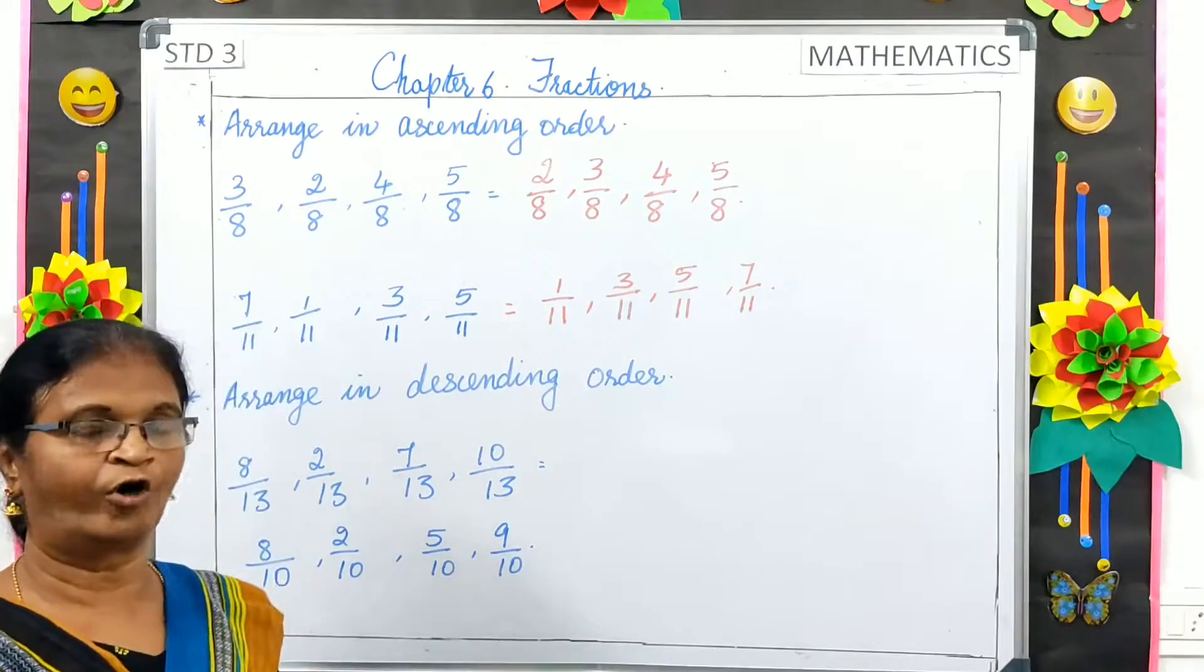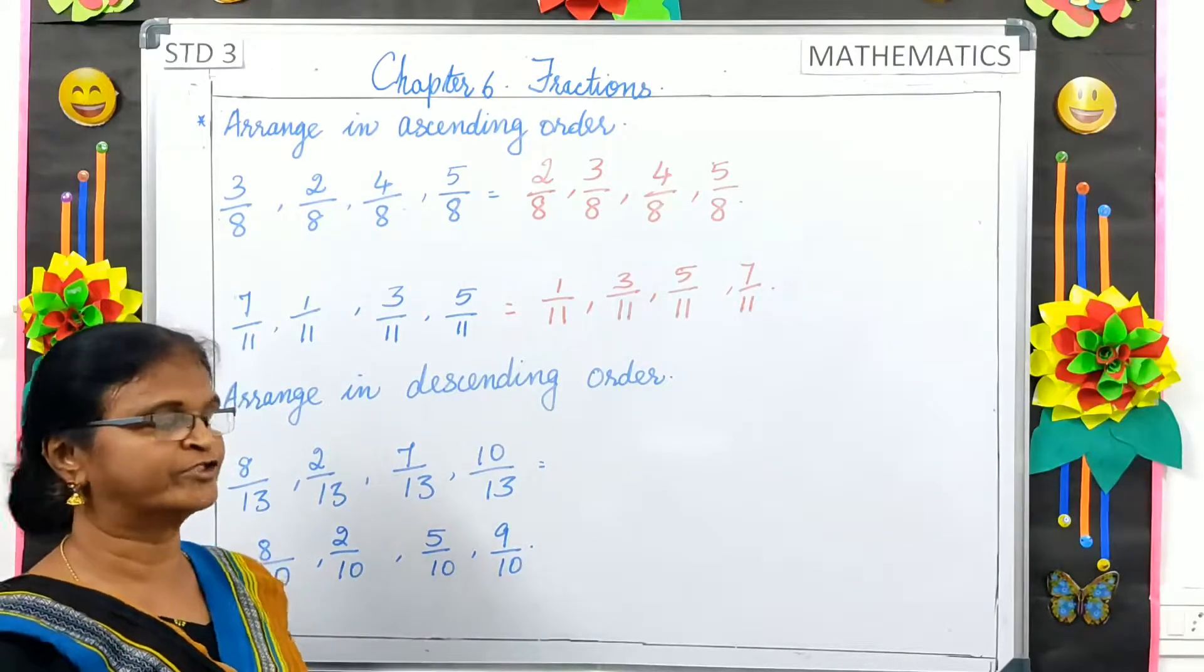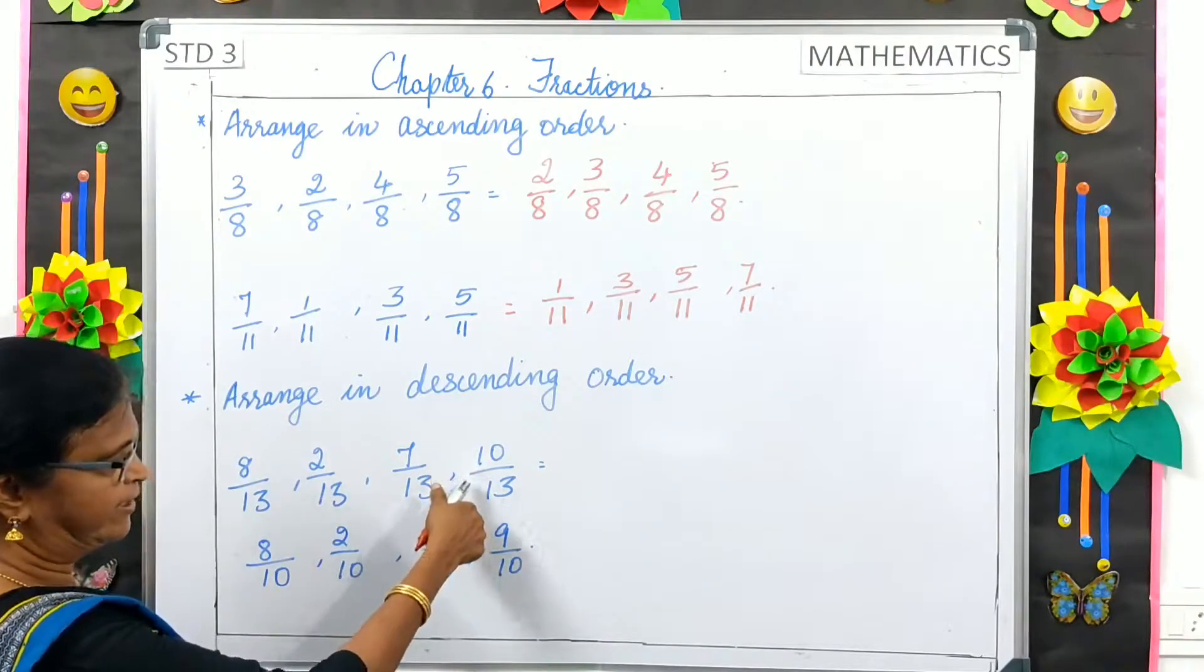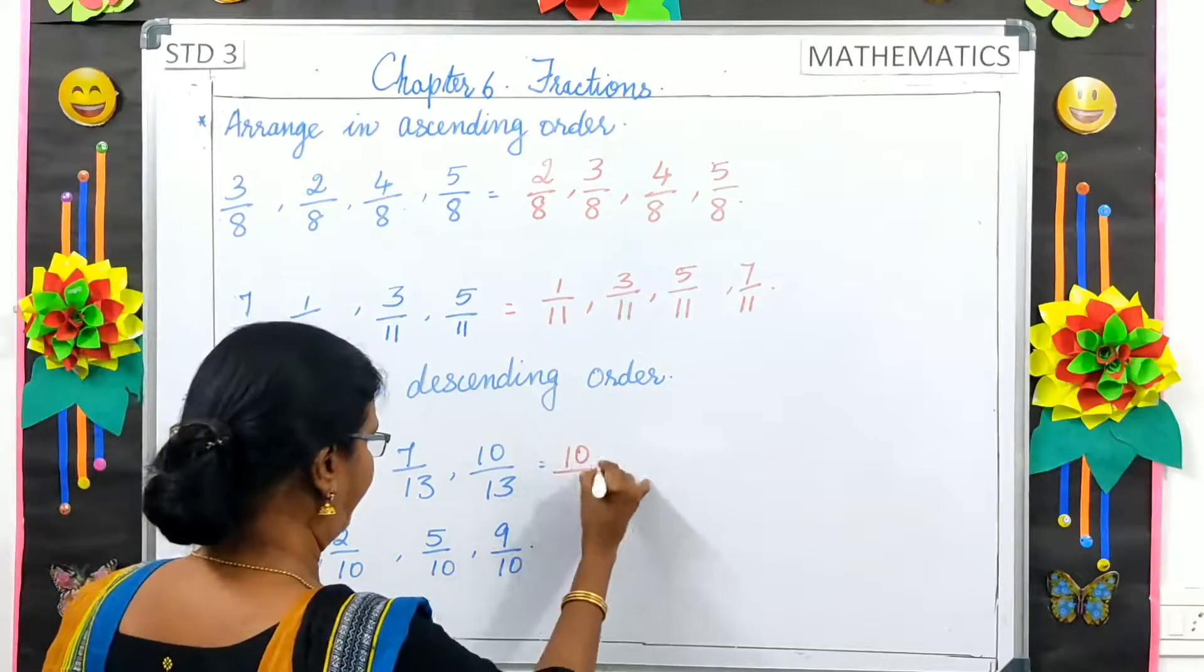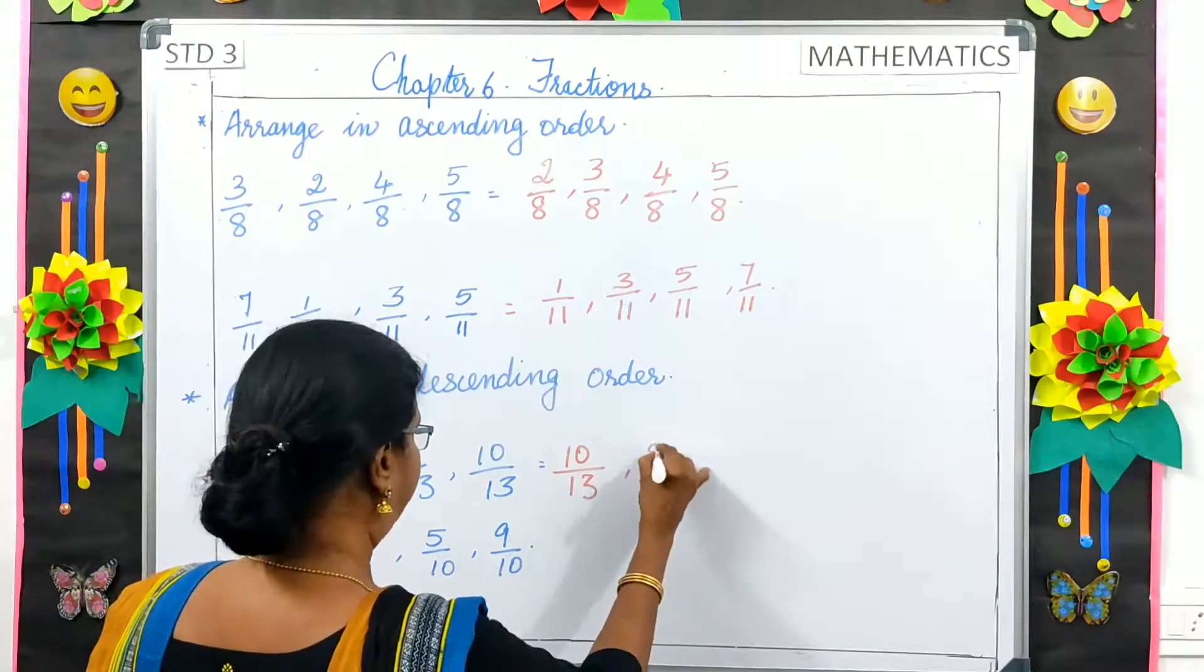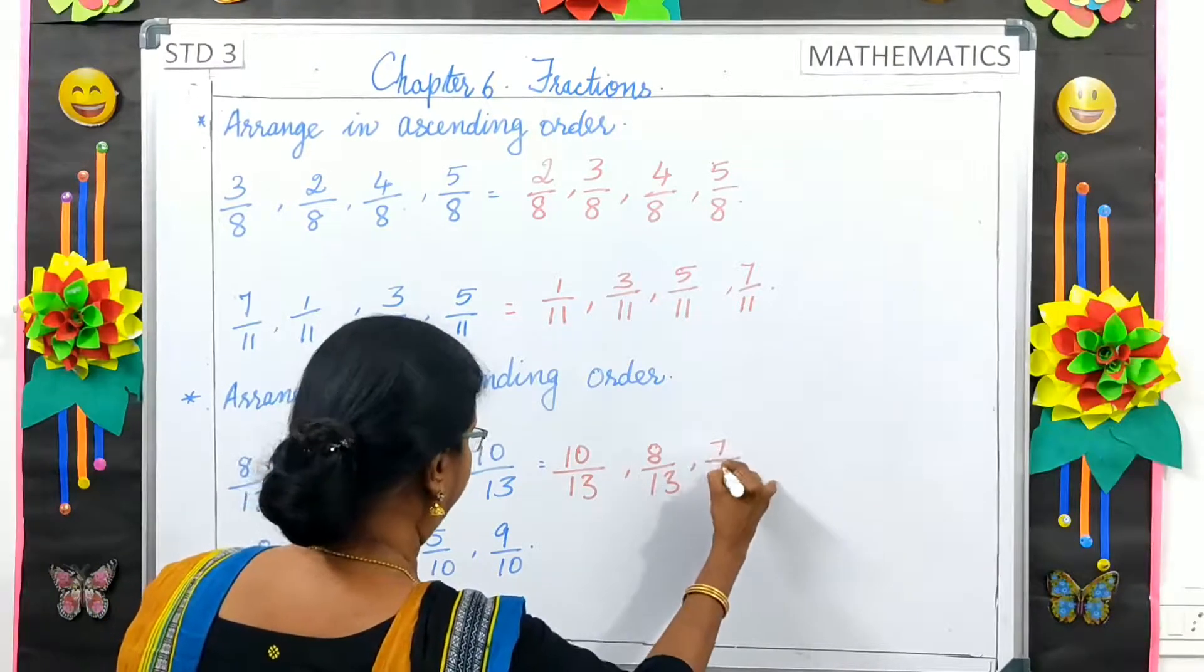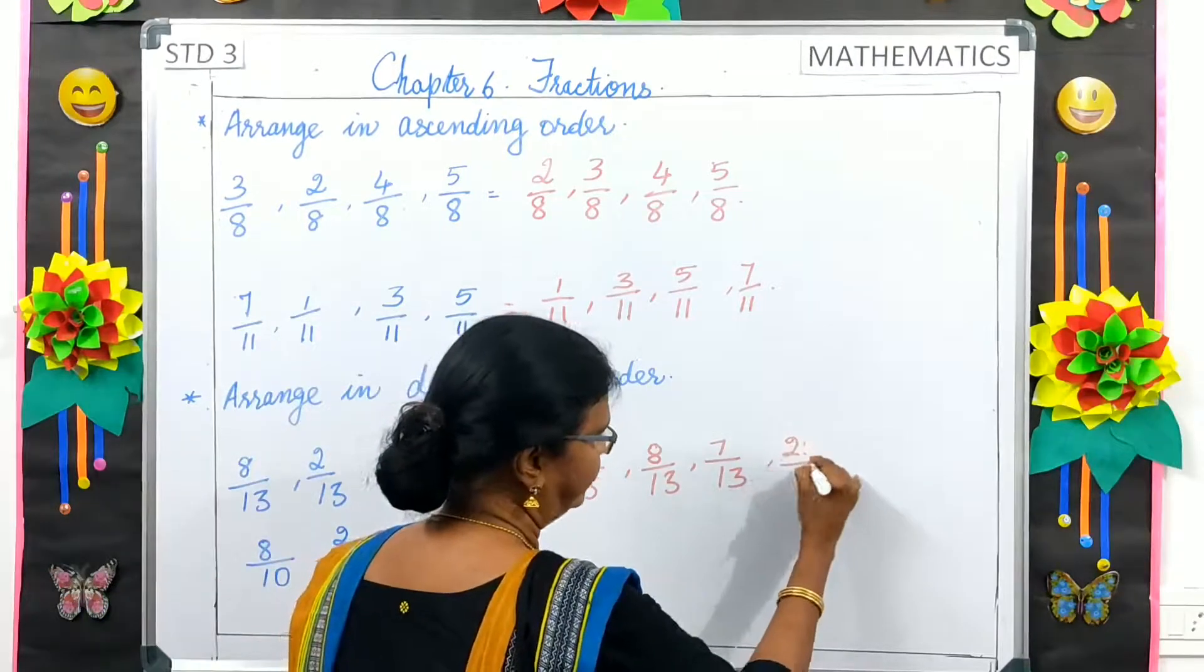Write in descending order. Descending means from the biggest to the smallest. Here, the biggest numerator is 10, so we will start from 10 by 13. Then, 8 by 13, 7 by 13, and 2 by 13.